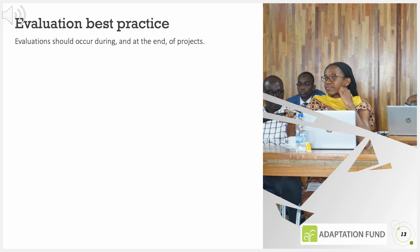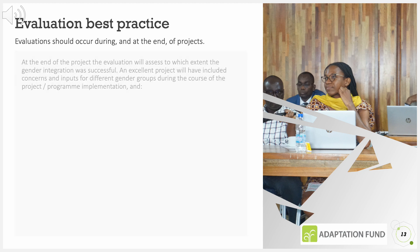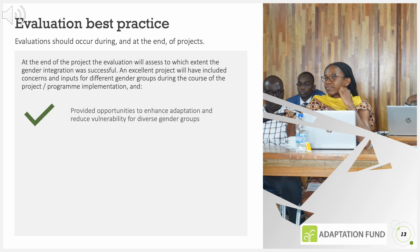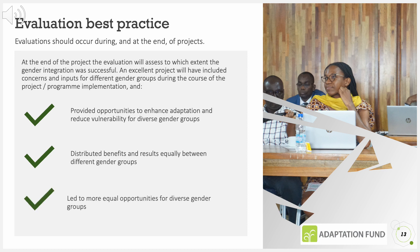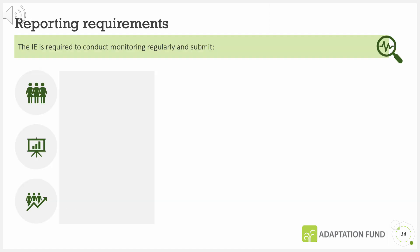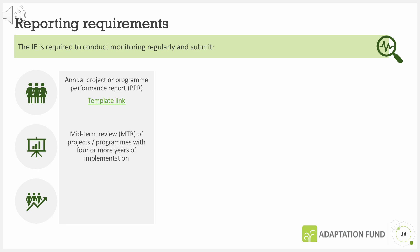Evaluations should occur during and at the end of projects or programmes. At the end of the project, the evaluation will assess to which extent the gender integration was successful. An excellent project will have included concerns and inputs from different gender groups during the course of implementation, provided opportunities to enhance adaptation and reduce vulnerability for diverse gender groups, distributed benefits and results equally, and led to more equal opportunities. The implementing entity is required to conduct monitoring regularly and submit an annual project or programme performance report (PPR), a midterm review of projects or programmes with four or more years of implementation, and a final evaluation within nine months of the project or programme completion.